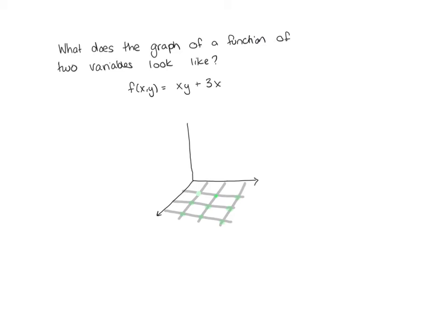Since I'm allowed to have both an x and a y, my input is going to be in two dimensions. For example, let x = 1 and y = 0. I plug that in: f(1, 0) = 1·0 + 3·1 = 3. So at that point, my function value is 3, meaning I go up to a z-value of 3. That's a point on my graph.